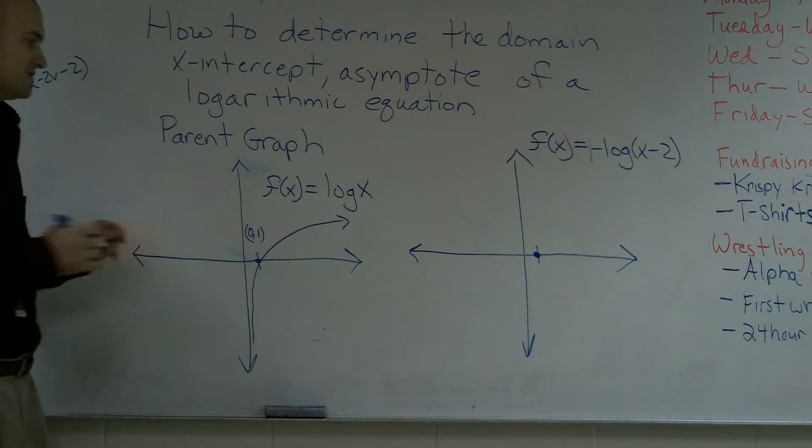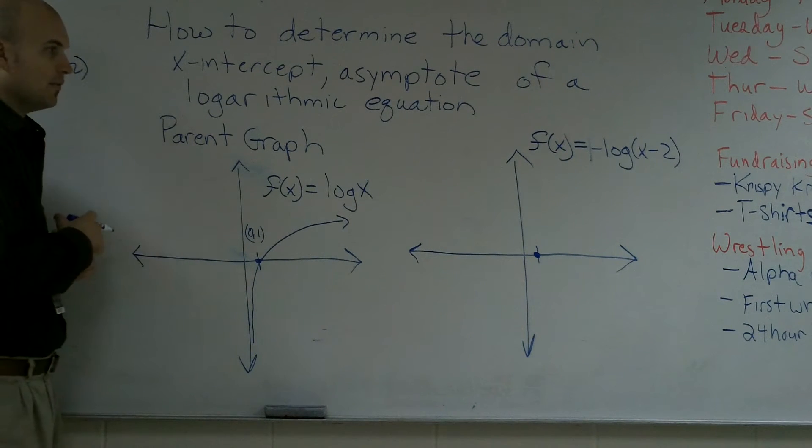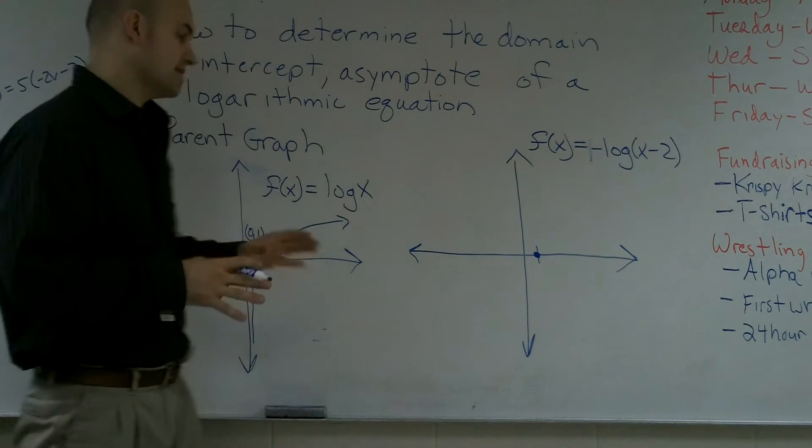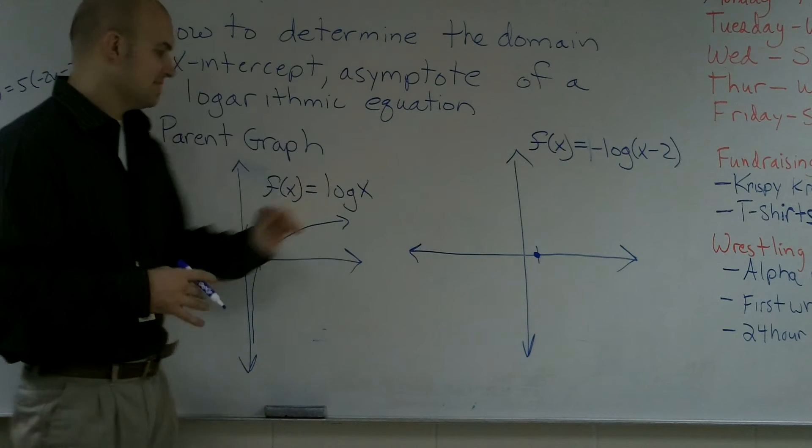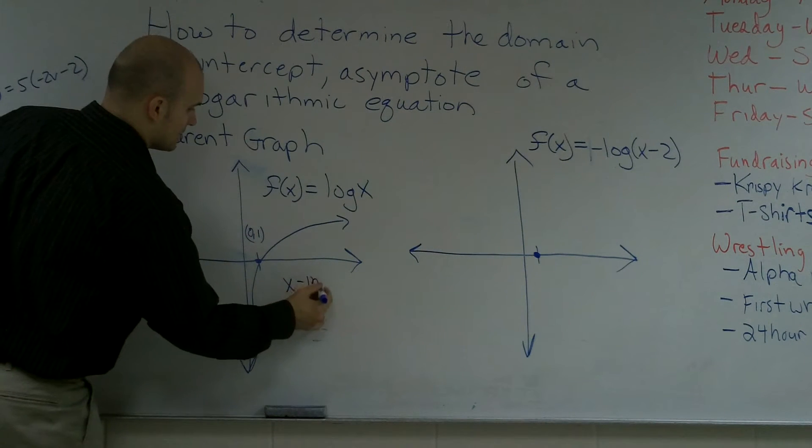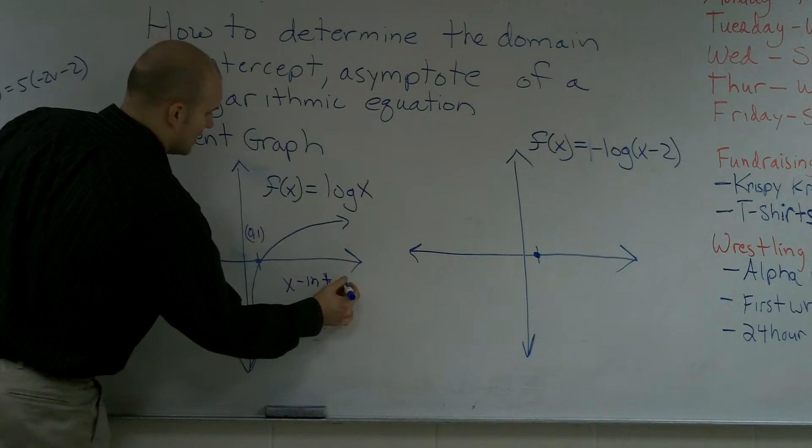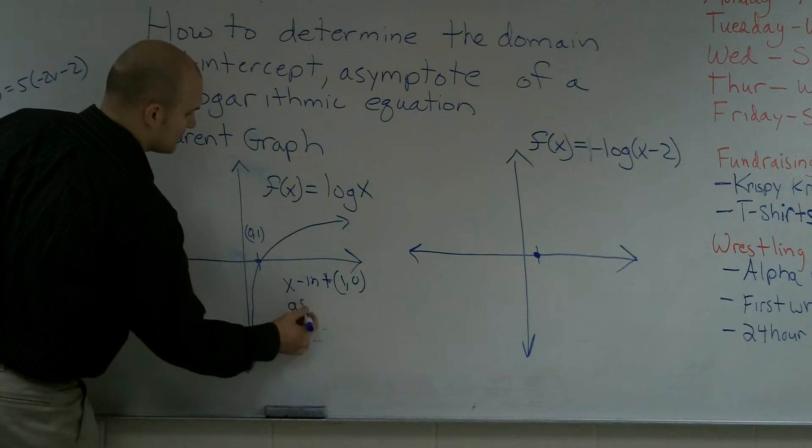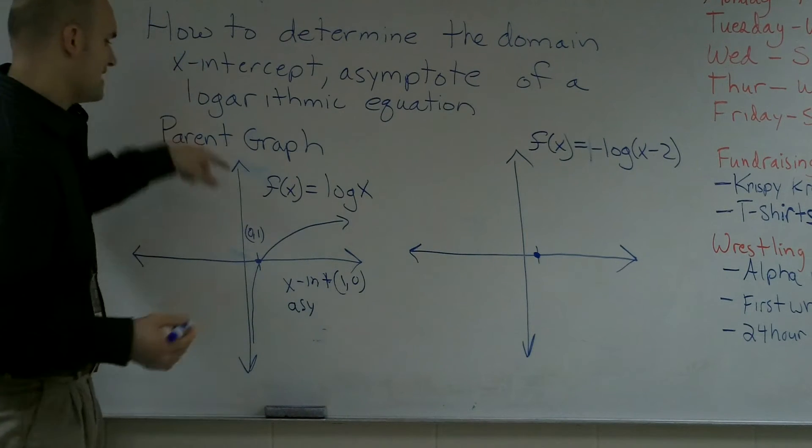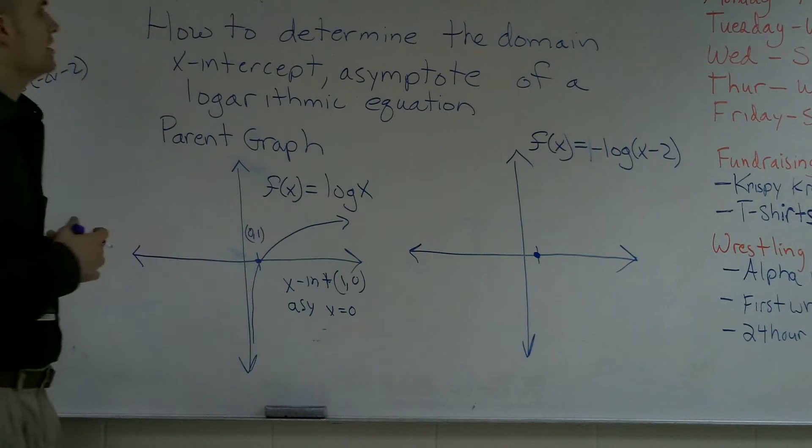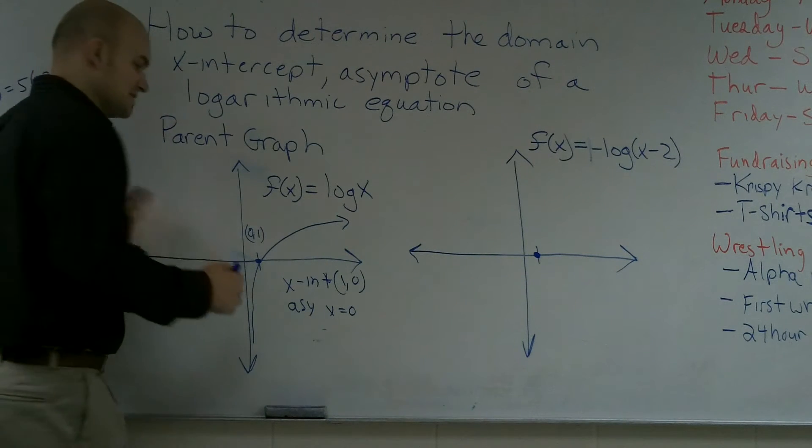And the one important thing is that the x-intercept is at (1,0). Now, if I'm going to be graphing a different logarithm, before I go ahead and graph this, a couple of key elements: I know that the x-intercept is at (1,0). I know that the asymptote is at 0, when x equals 0. And the domain is going to be from 0 to infinity.